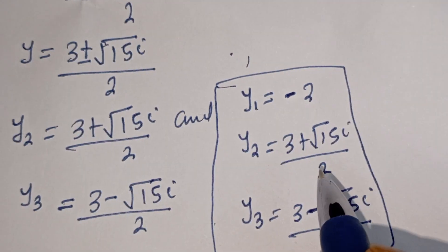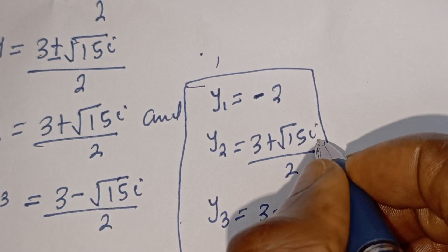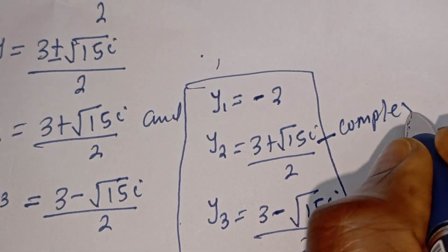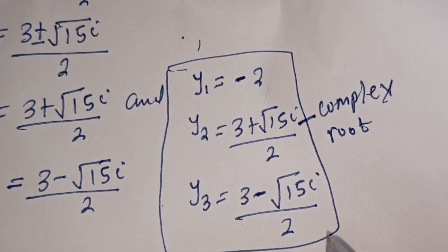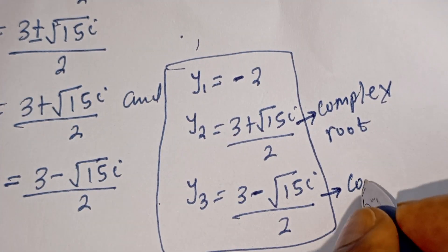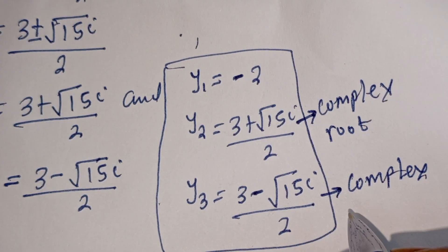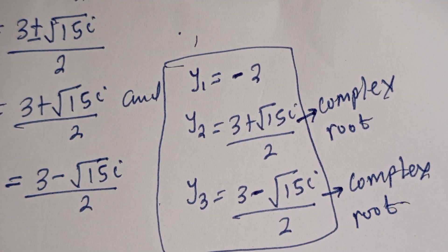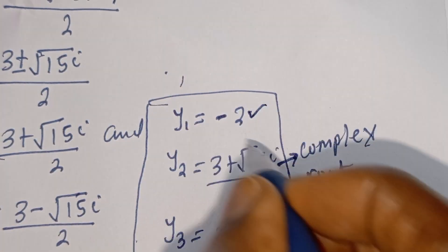You can see that y₂ and y₃ are complex roots. The only real root we have is y equals minus 2.